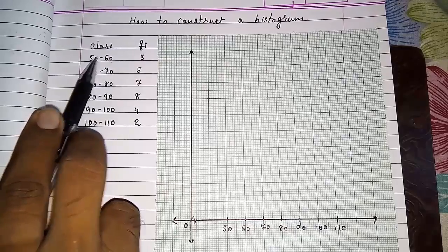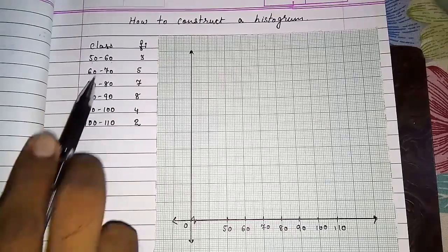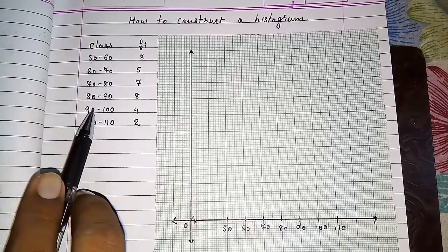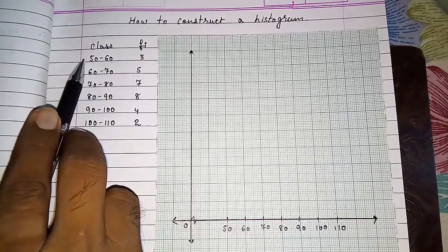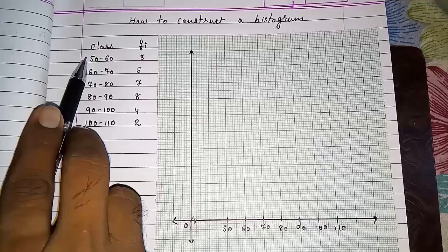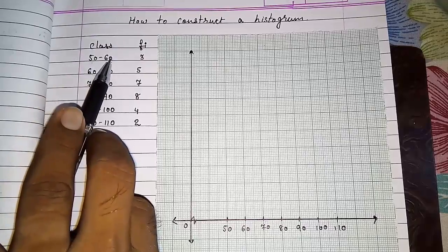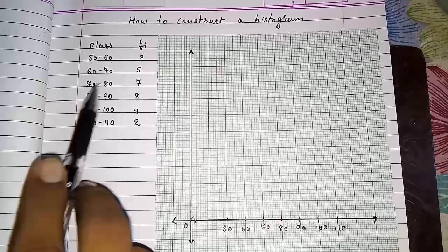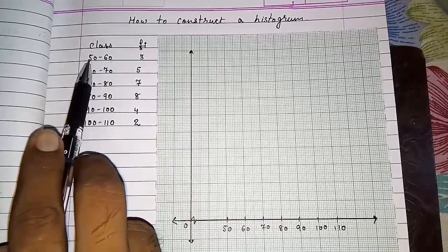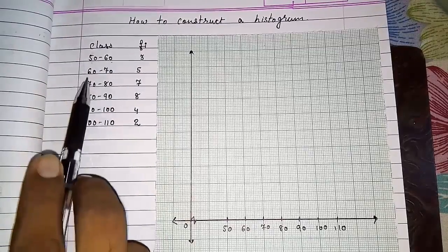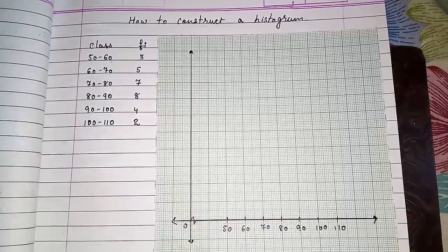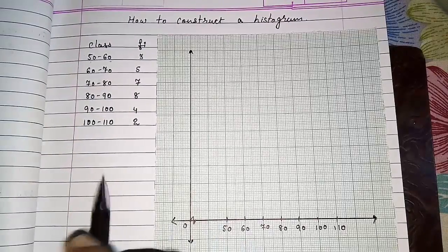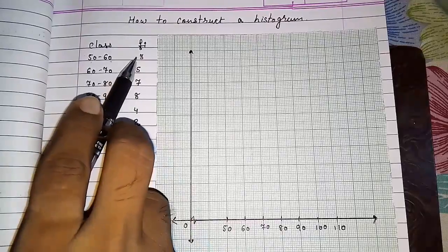If here it's given like 50 to 59, 60 to 69, 70 to 79, then first we have to make the class continuous by subtracting 0.5 from the lower limit and adding 0.5 to the upper limit. So the class will become continuous. Here we can see that the ending point of one class will be the starting point of the second class.